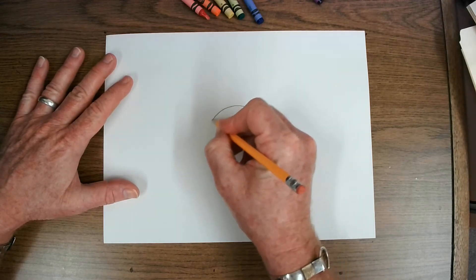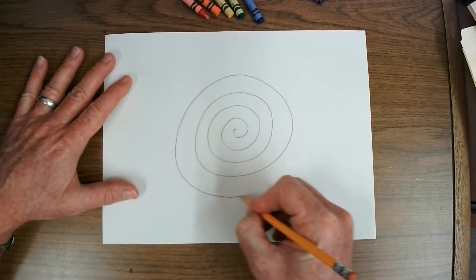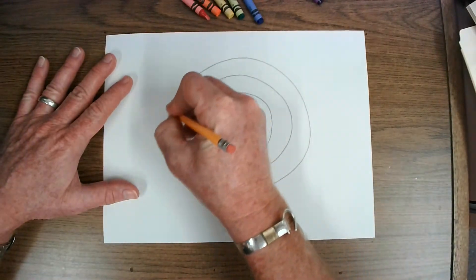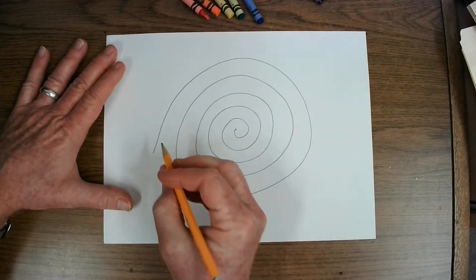And we don't want it so big that it fills up the page but we want it to take up most of the space in the middle of the page about like this. And I'm going to stop right there. Looks like a big cinnamon roll or perhaps a snail.